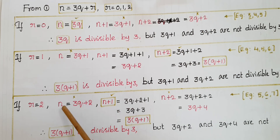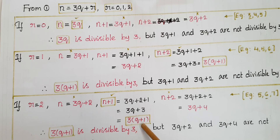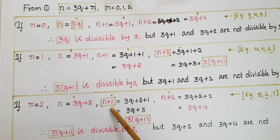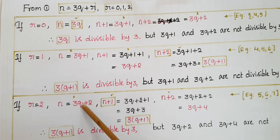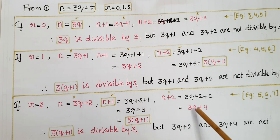If r = 2: n = 3q+2, n+1 = 3q+2+1 = 3q+3 = 3(q+1), and n+2 = 3q+2+2 = 3q+4. Out of these three consecutive positive integers only 3(q+1), that is n+1, is divisible by 3, while 3q+2 and 3q+4 are not divisible by 3. For example, taking q = 1 gives n = 5; the next number is 6 and the next is 7. Out of these three numbers only 6 is divisible by 3.